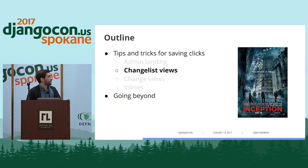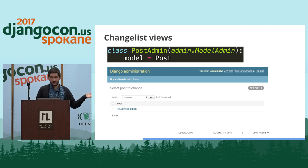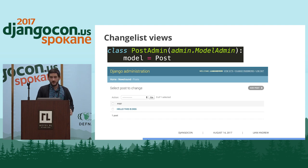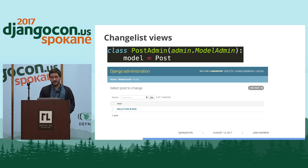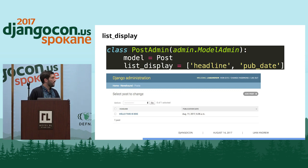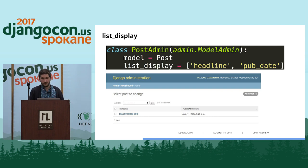Moving on to the changelist views — this is probably the bulk of it. Here's a basic changelist view with just the blog post. You'll see there's one article that's been published, and it has a great headline, but it doesn't give us very much information. So the first thing you can do is add list_display to your changelist. This lets you add any other columns you want. Pretty straightforward — most people know this one.